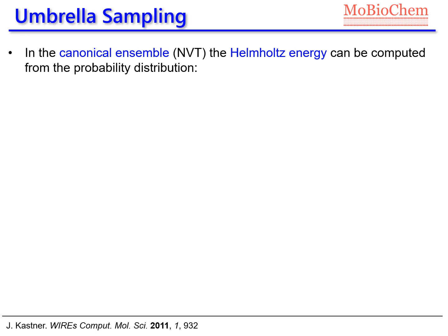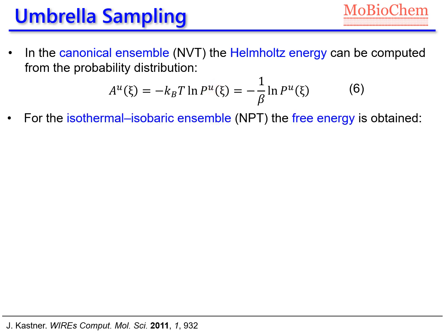Now let's see how to compute the free energy from umbrella sampling simulations. If we run simulations in the canonical ensemble — constant number of particles, volume, and temperature — we compute the Helmholtz energy from the probability distribution following equation 6: the Helmholtz energy equals minus the Boltzmann constant times temperature times the logarithm of the unbiased probability distribution. A similar equation applies in the NPT (isothermal-isobaric) ensemble using equation 7, giving the Gibbs free energy instead.